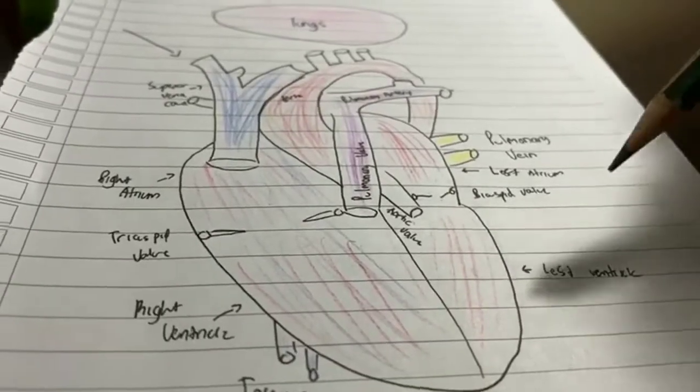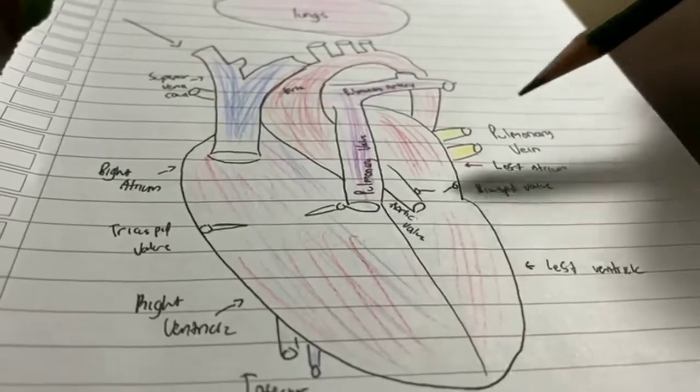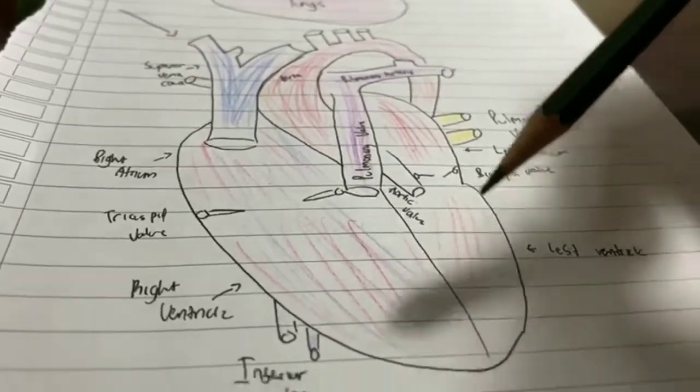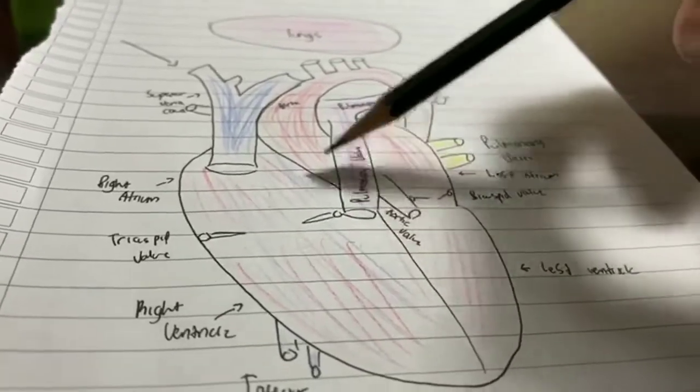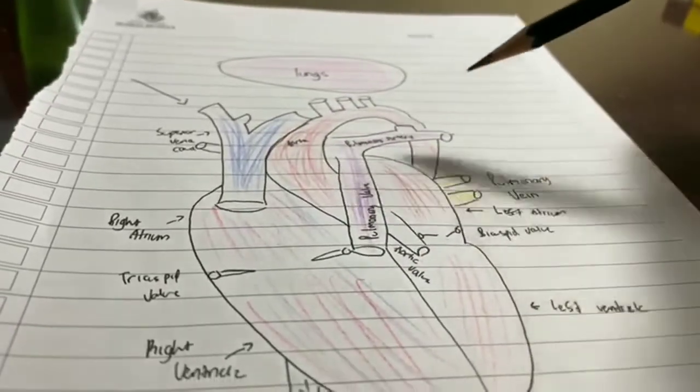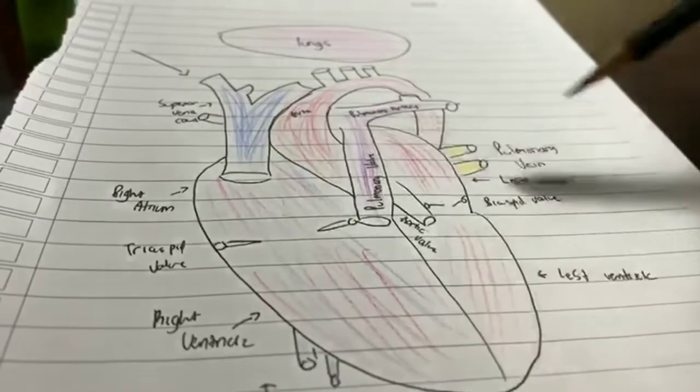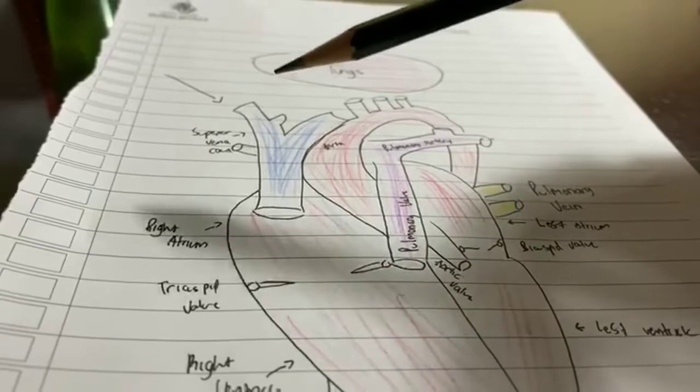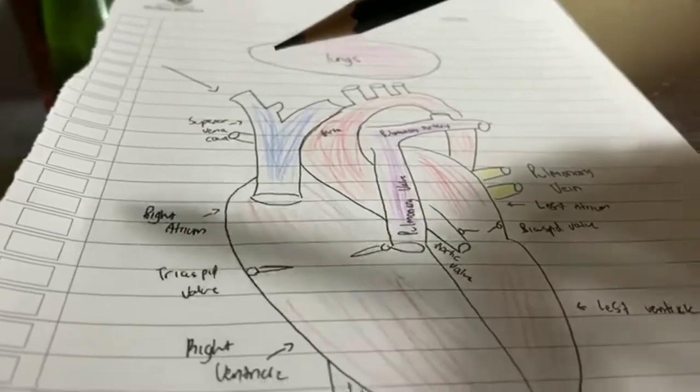Next, it goes through the bicuspid valve or the mitral valve and then it goes to the left ventricle. The left ventricle will pump the blood and then through the aortic valve, it will go through the aorta and then go back to the body. And then it will come around and then return to the superior vena cava as deoxygenated blood. That is called systematic circulation.